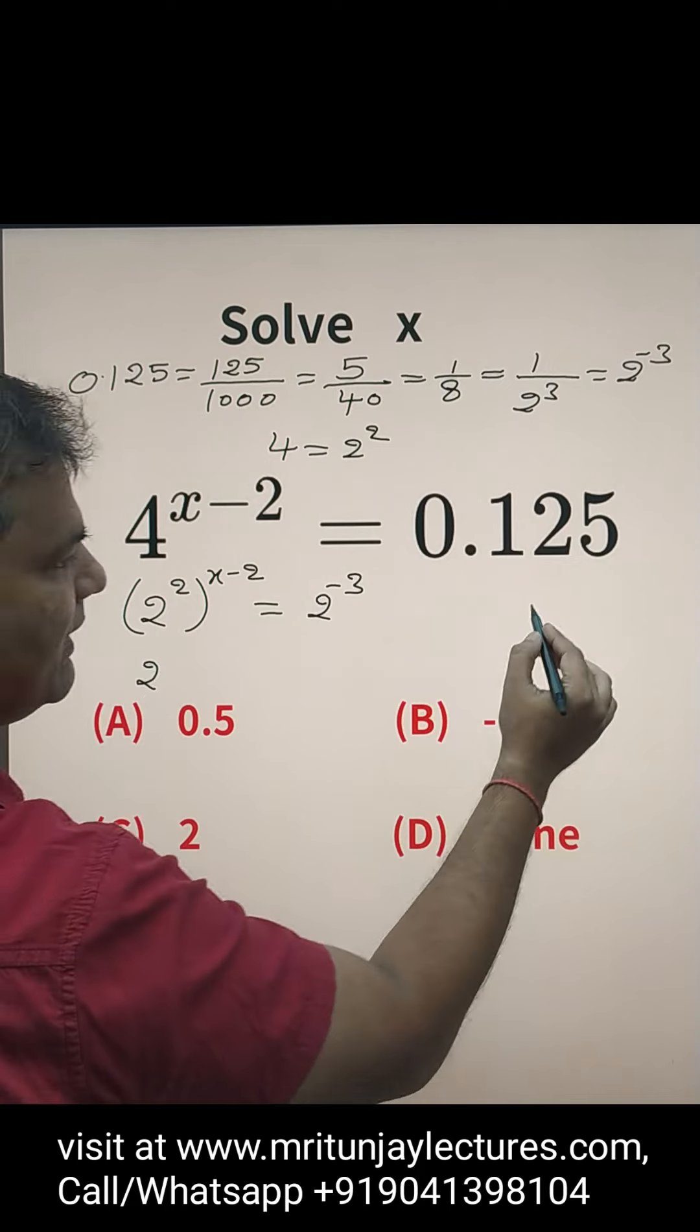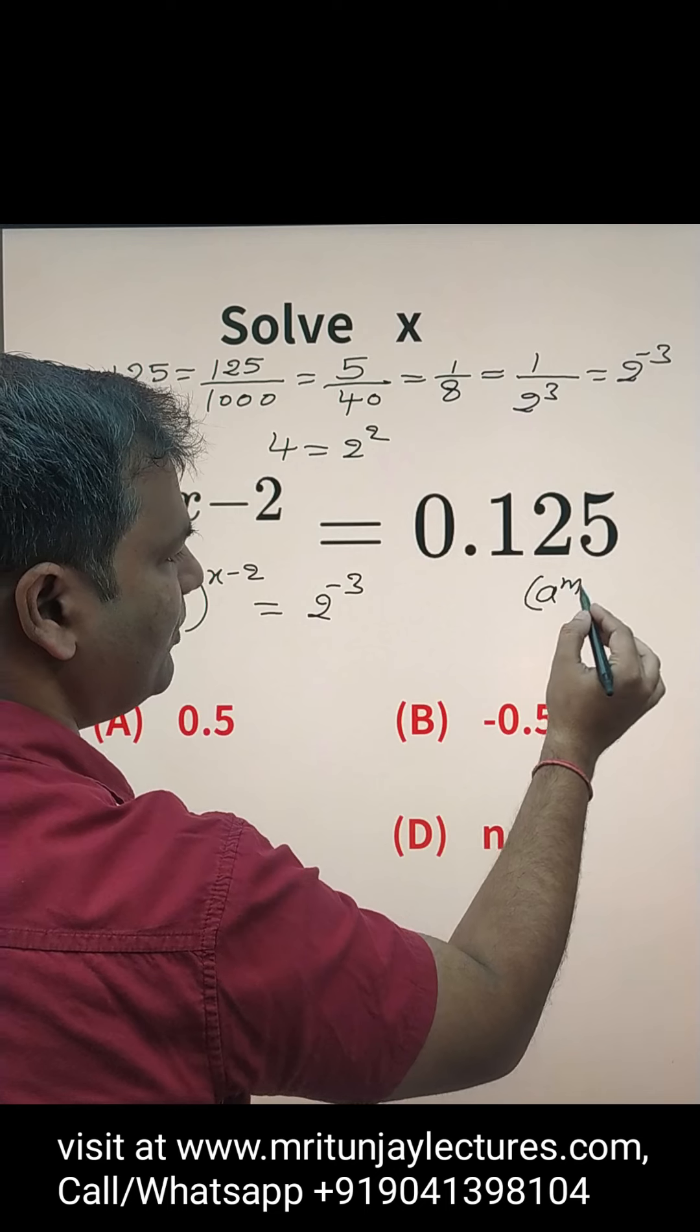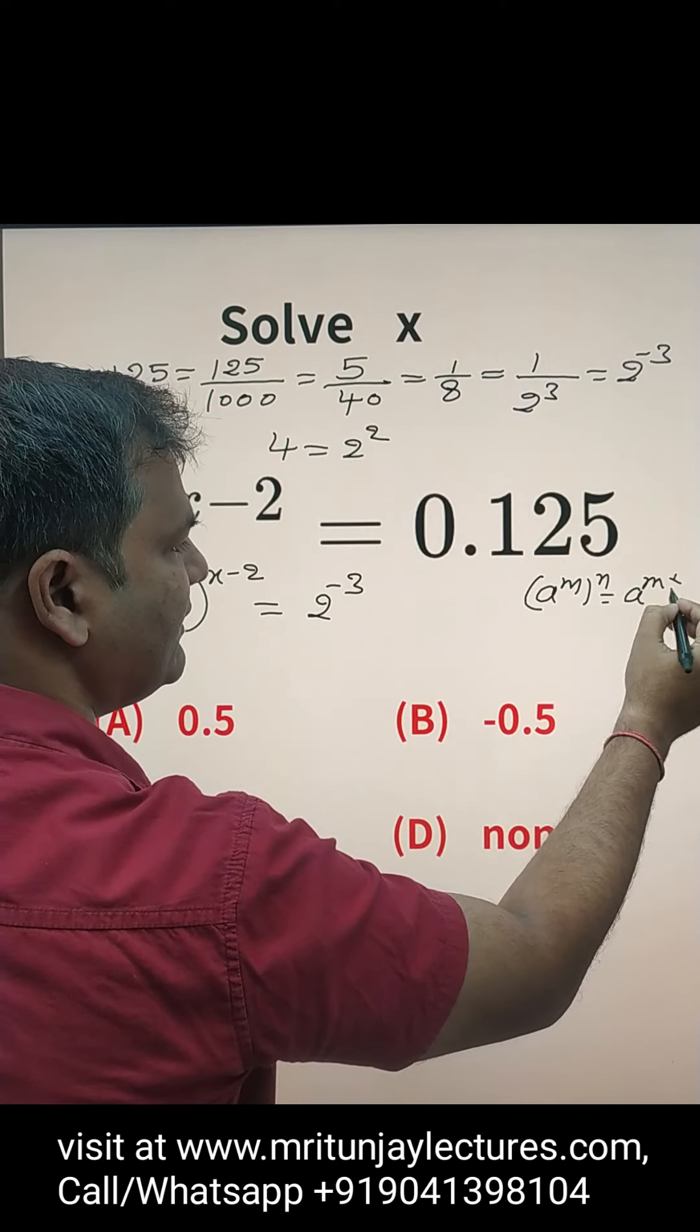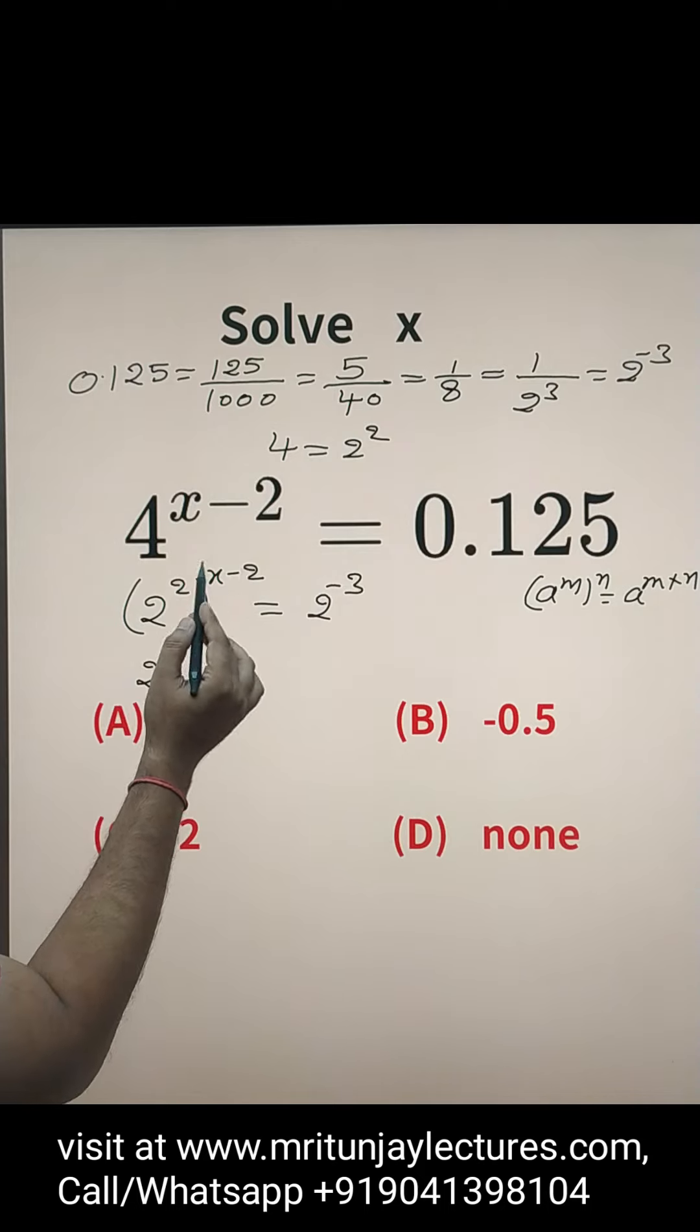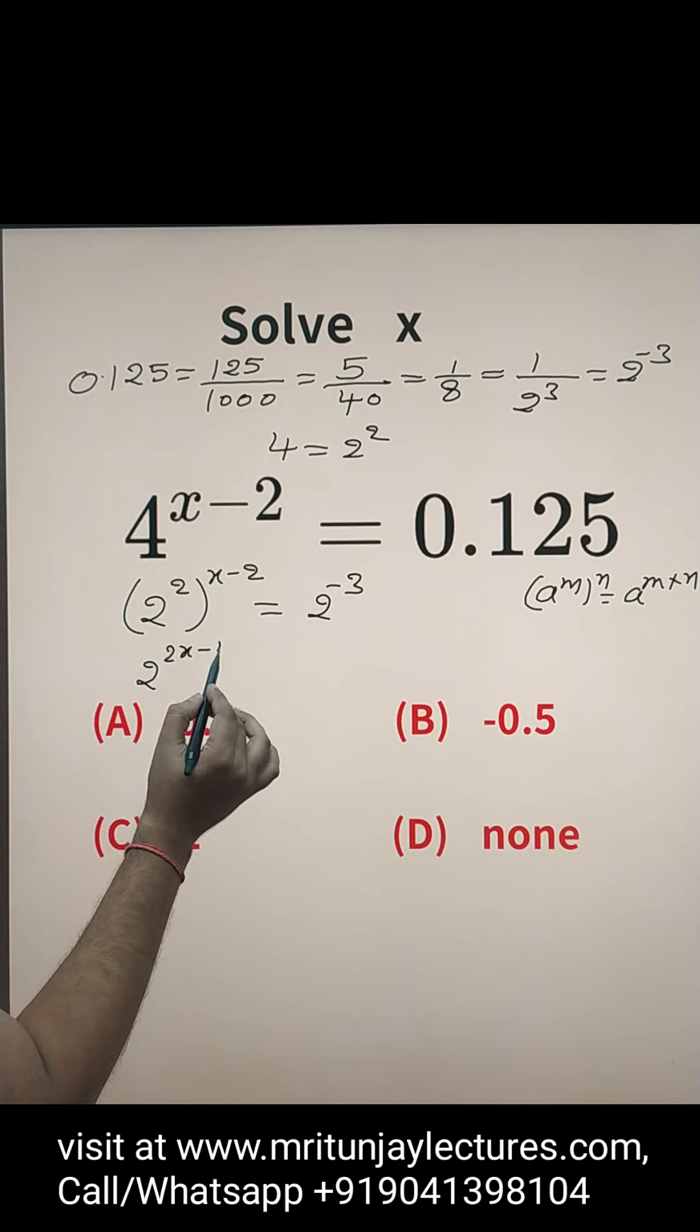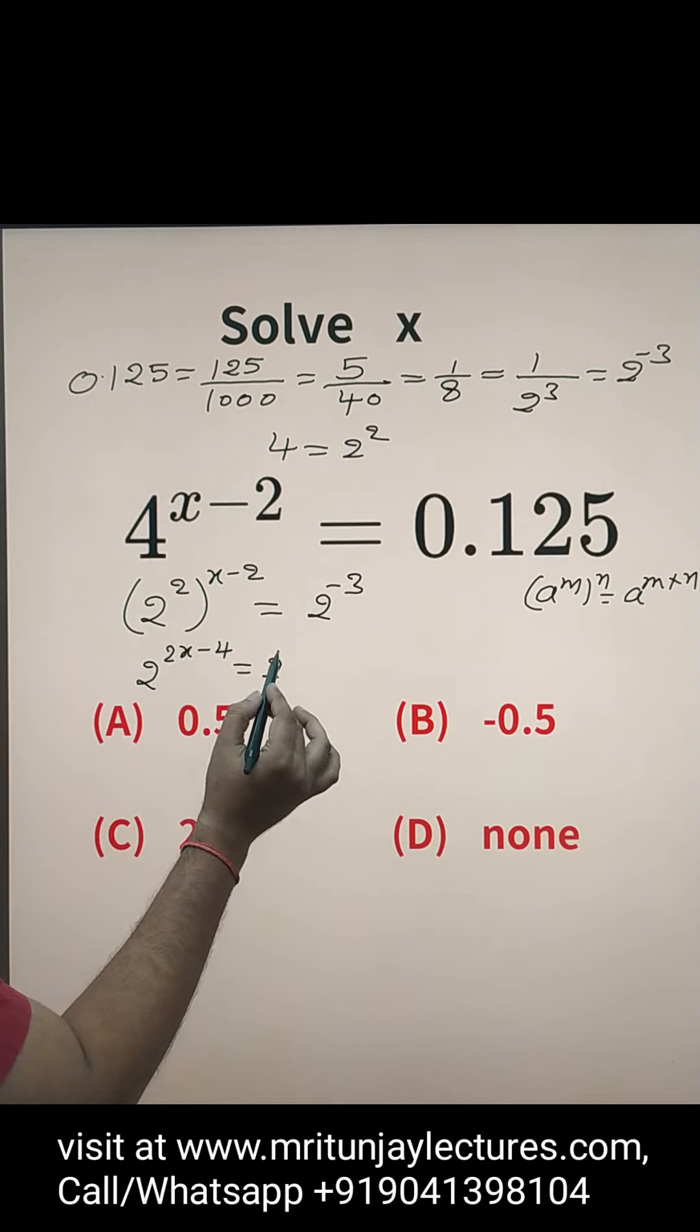I know that a to the power m to the whole power n equals a to the power m times n. So 2 times x minus 2 gives us 2x minus 4 equals 2 to the power minus 3.